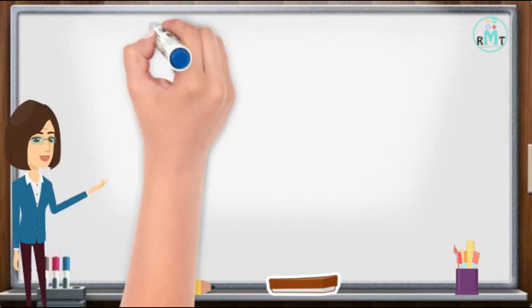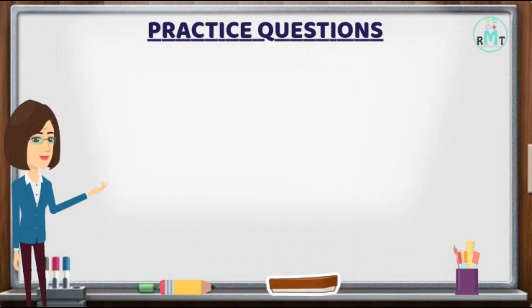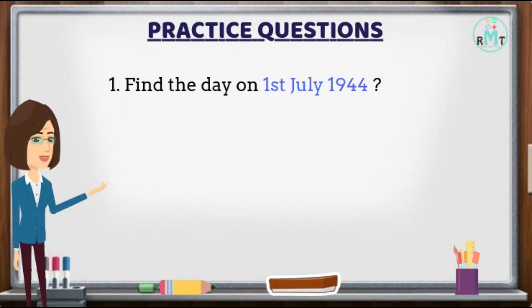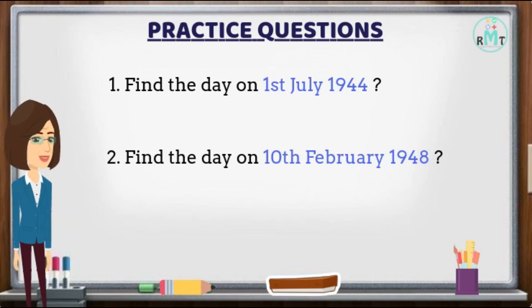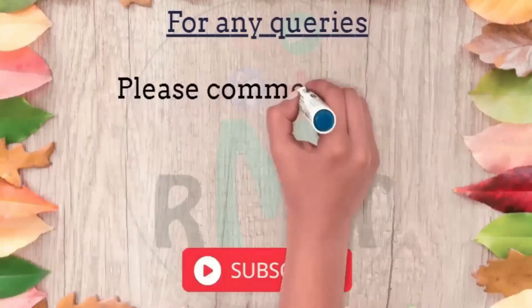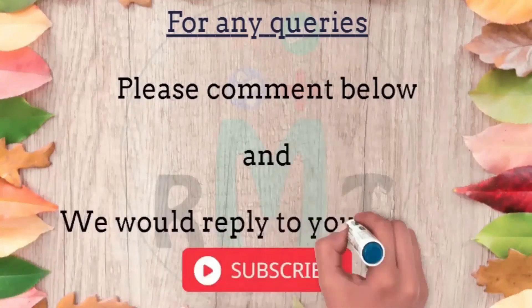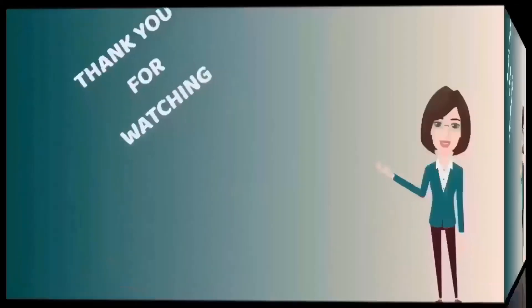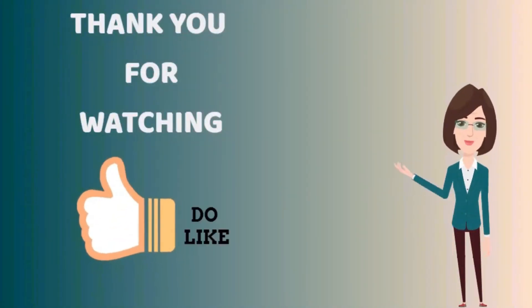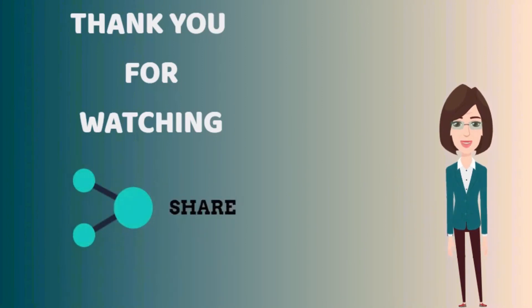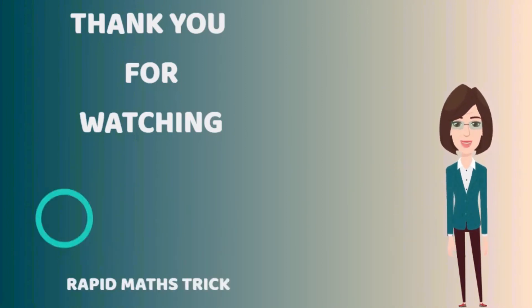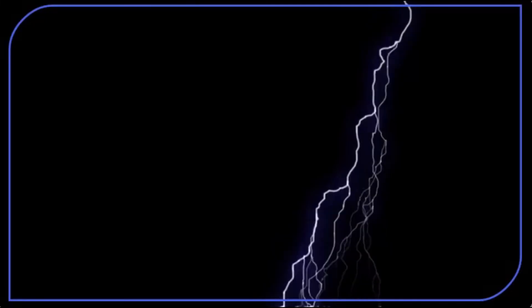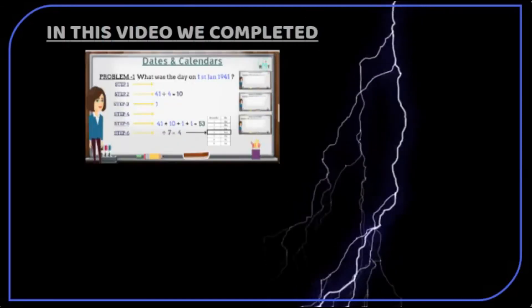Now I will give you a question for practice: find the day on 1st July 1944. For any queries, please comment below and we would reply. Thank you for watching. If you like this video, please do like, share, and subscribe to Rapid Math Tricks for more knowledgeable videos, and don't forget to hit the bell icon. In this video we completed dates and calendars.